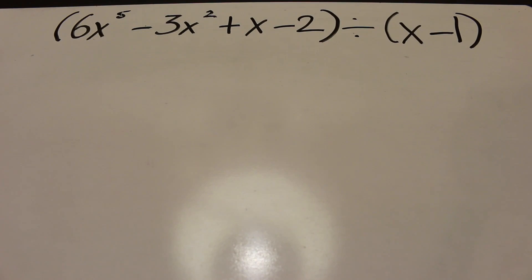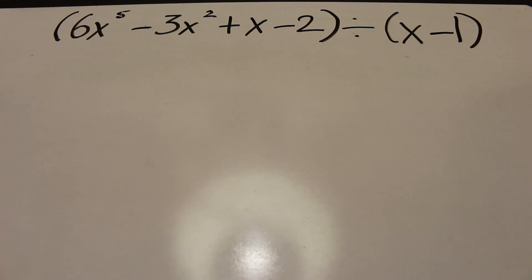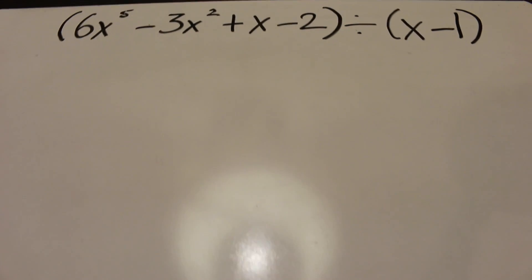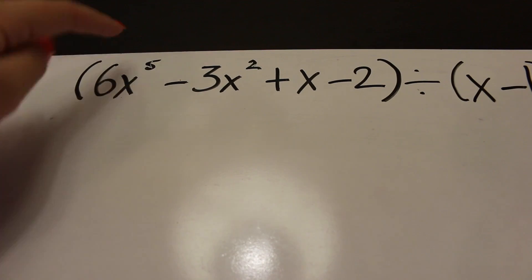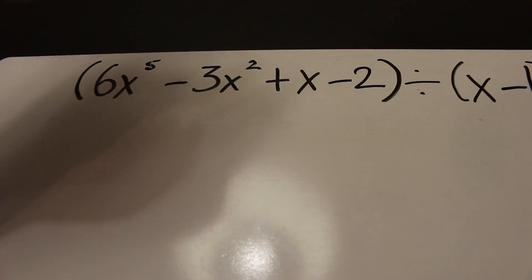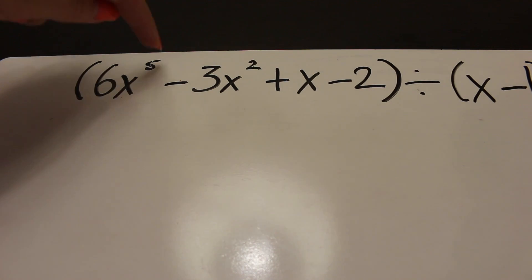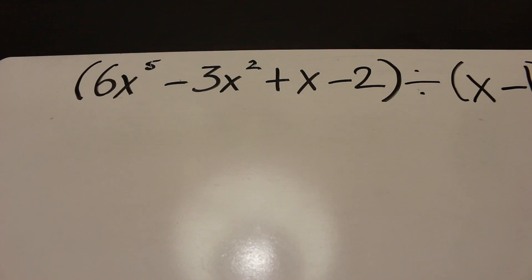Now let's do a slightly harder equation: 6x to the power 5 minus 3x to the power 2 plus x minus 2, divided by x minus 1. First check if we need a placeholder. The powers present are 5, 2, 1, and 0 — we need them in order: 5, 4, 3, 2, 1, 0. We are missing 4 and 3, so we replace them with zeros.